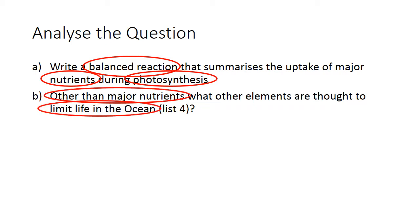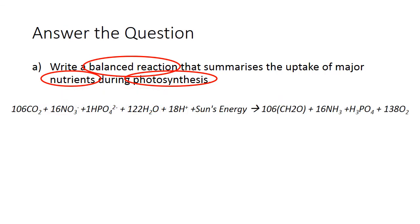The question 'other than major nutrients, what limits life in the ocean?' is really telling you that we want a list of four things. For the first part of that question, very simply, there's the Redfield equation — you write down this equation as given here and you get lots of marks. The important things I was looking for in this equation is basically showing that we've worked with nitrate and phosphate.